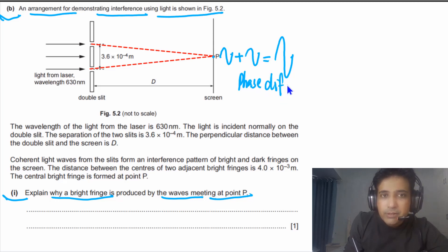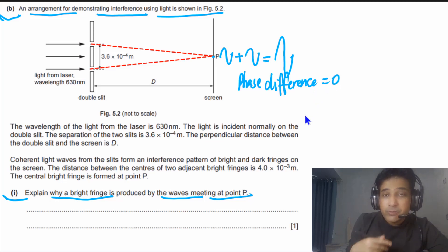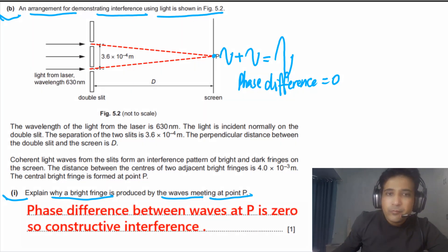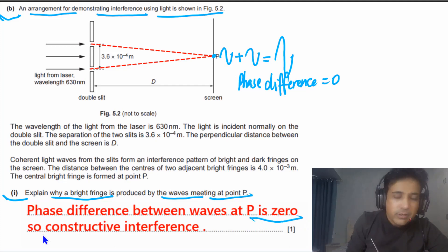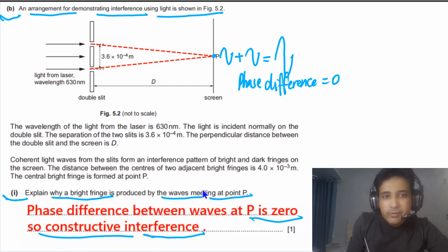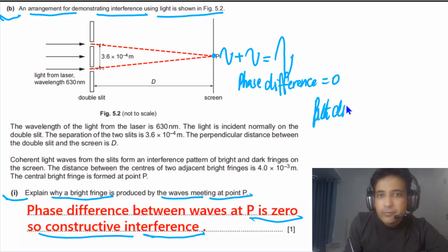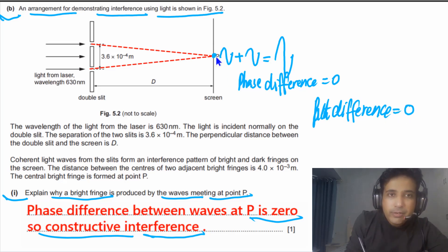The phase difference between the waves at point B is equal to 0, so there is constructive interference and a bright fringe is formed at point B. You can also state this in terms of path difference: the path difference is also equal to 0, which is why there is a bright fringe.